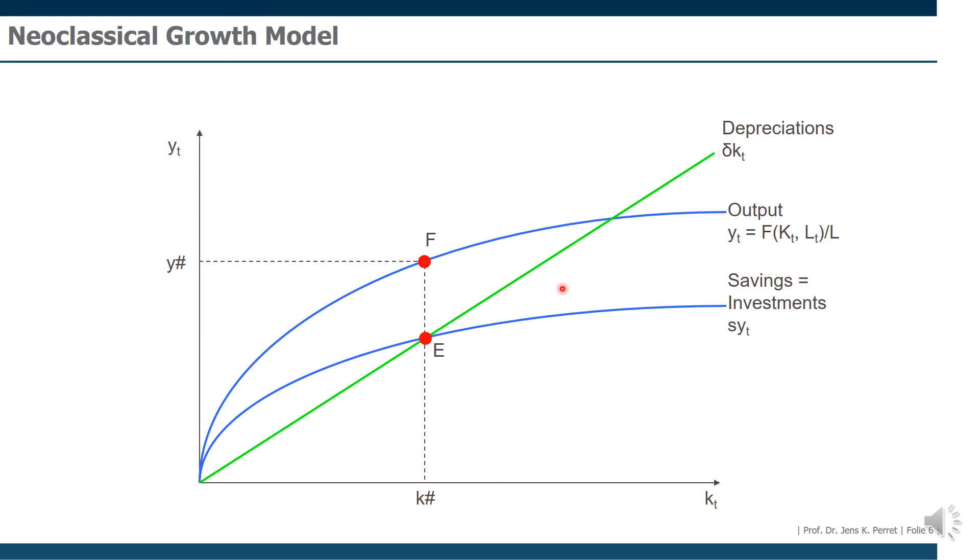So in other words, this point E, where the savings curve intersects the depreciation curve, gives us the steady state capital stock per capita.